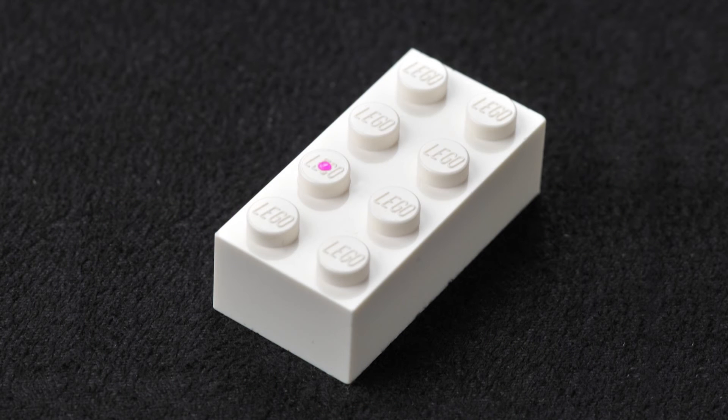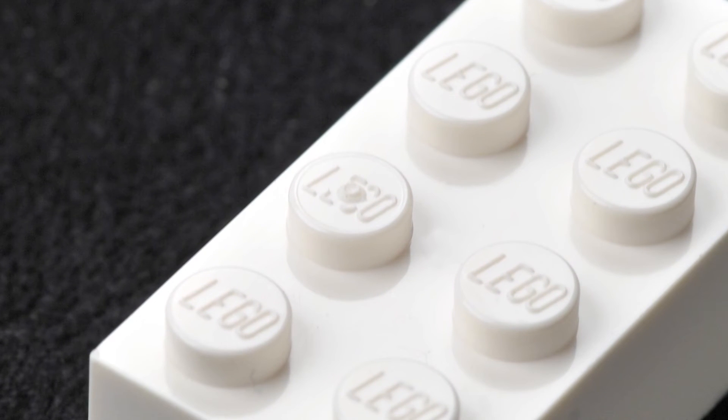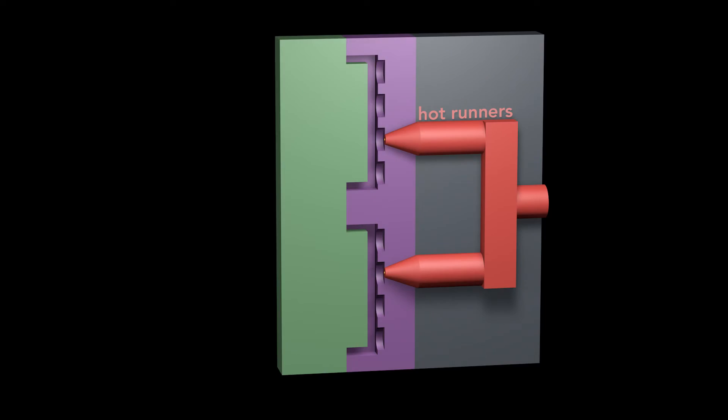One impressive example of injection molding is the Lego brick. You can see the injection point in the middle of a stud, but this is not from a gate or a sprue. The Lego molds use hot runners.